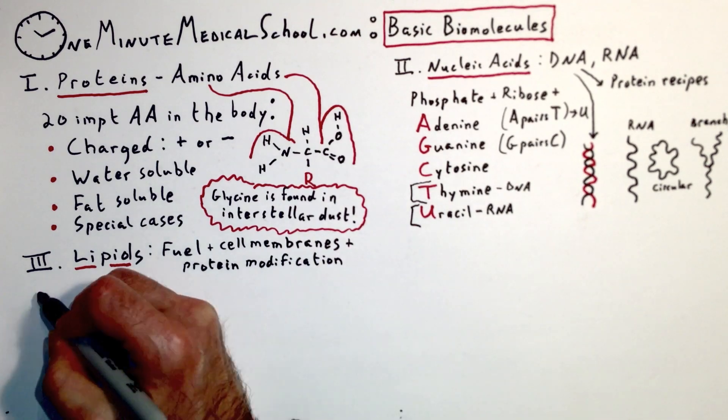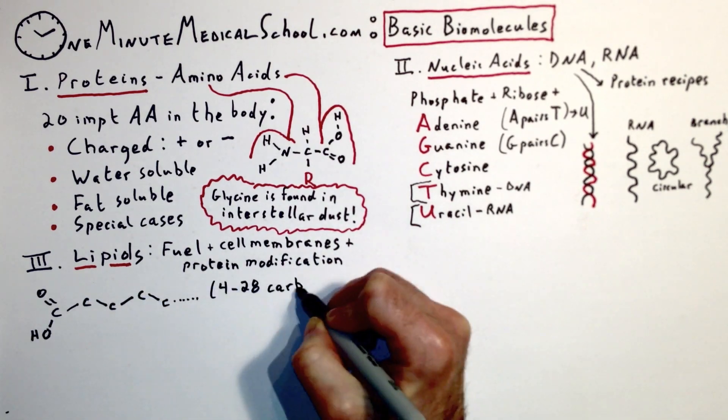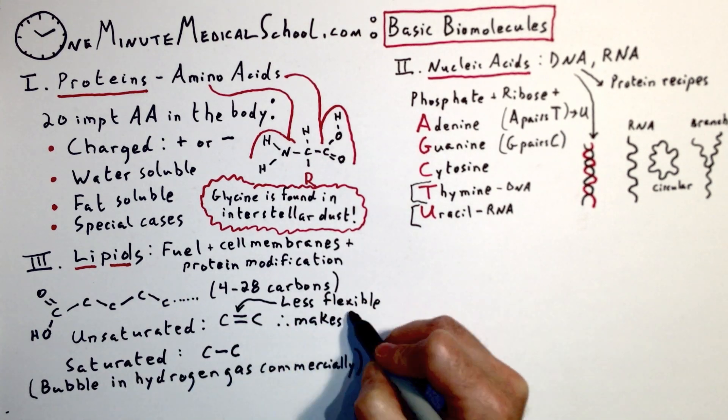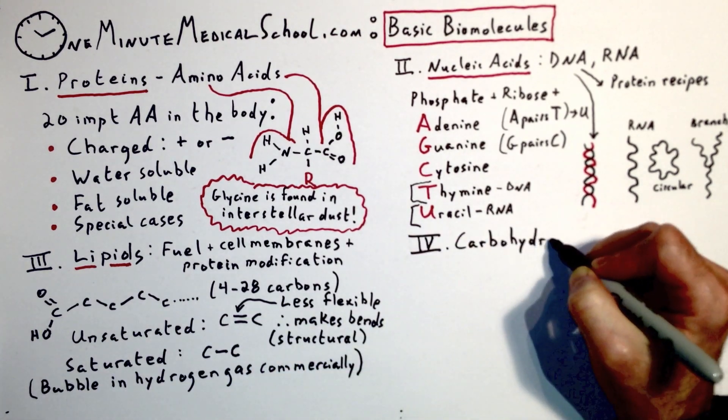Lipids are fuel or found in cell membranes and used for protein modification. They are from 4 to 28 carbons long. Unsaturated have double bonds. These are kinked, which makes them useful for structure.